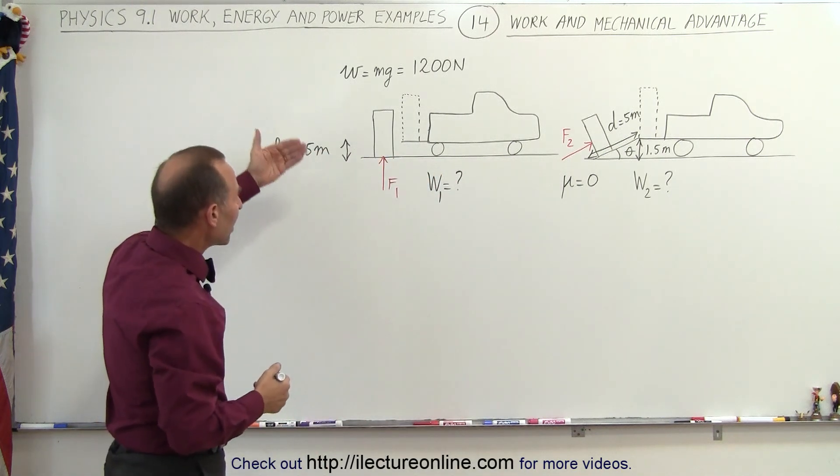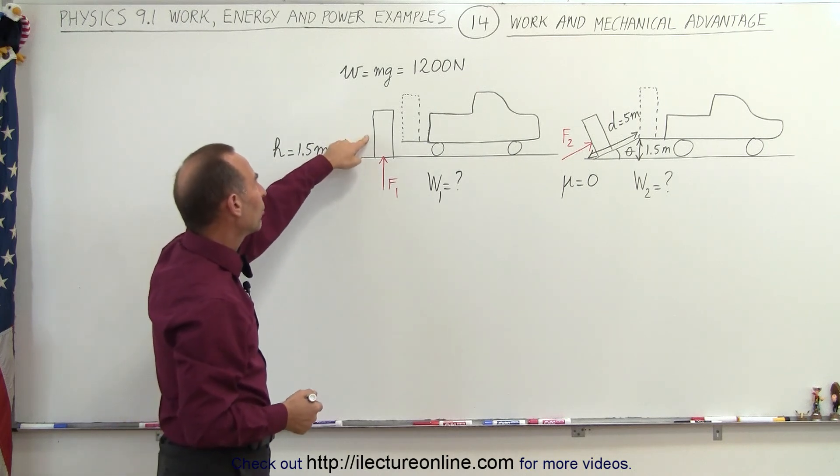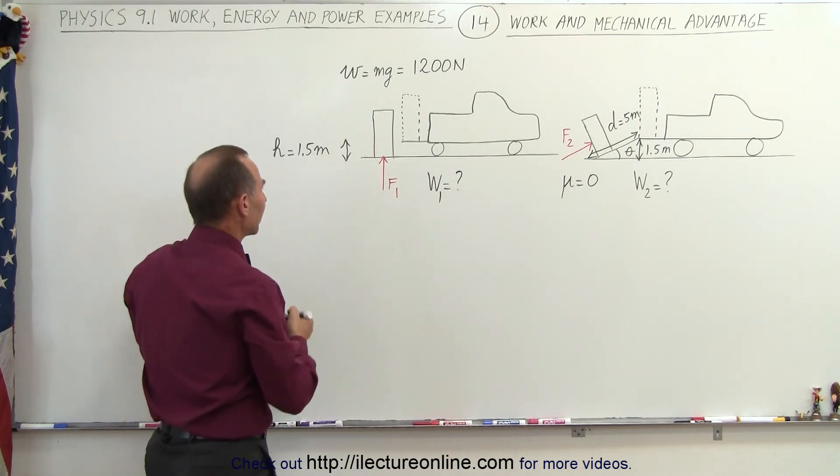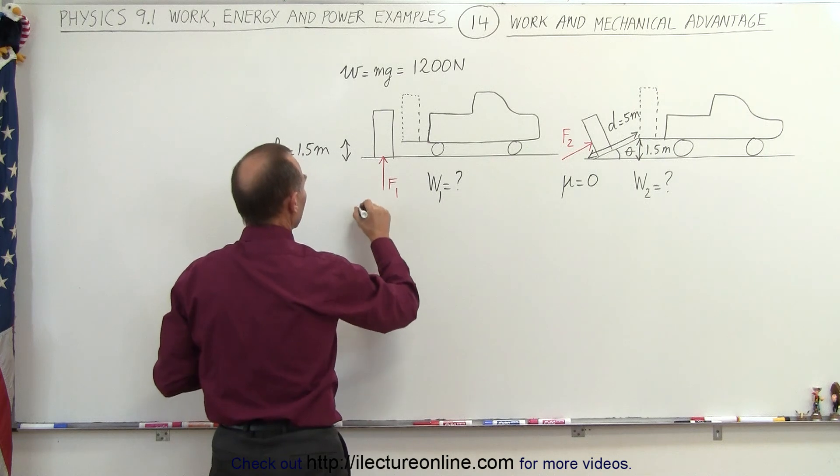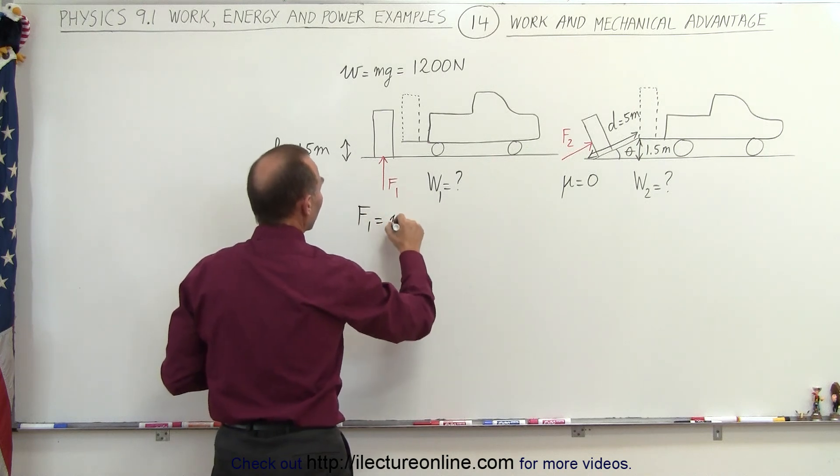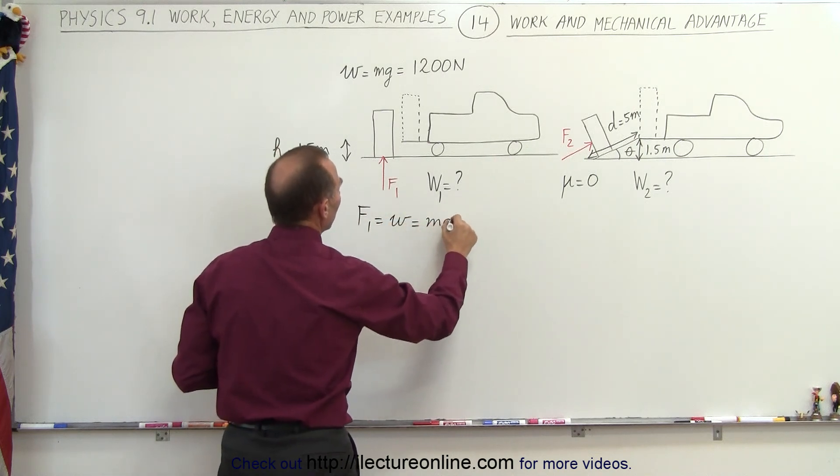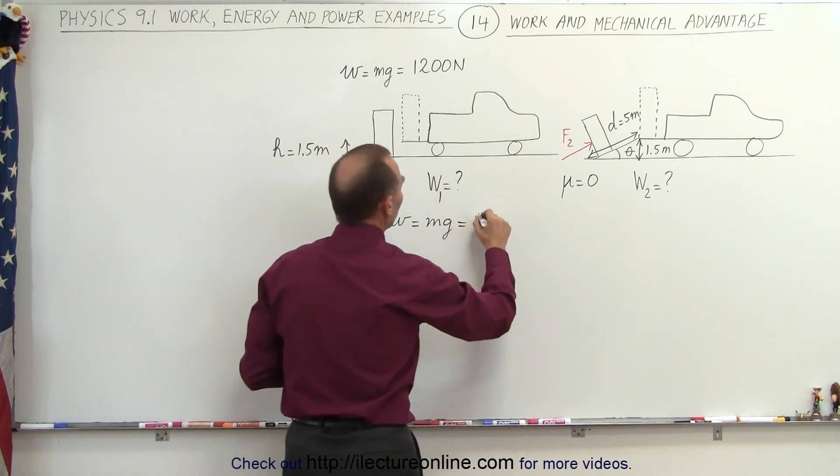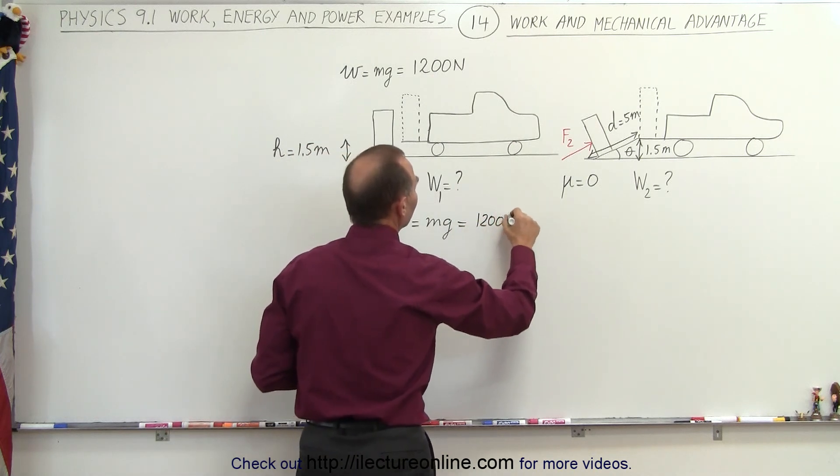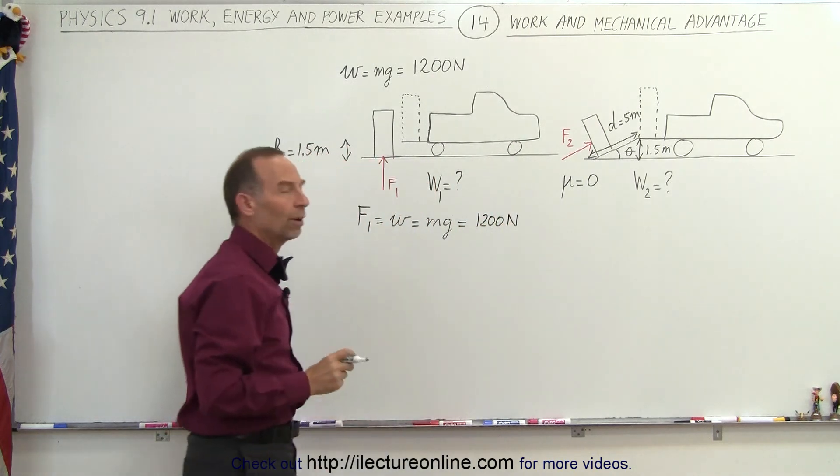But to lift it straight up, the force must be equal to the weight of the refrigerator, and so therefore we can say that F1 is equal to the weight, which is equal to mg, which is given to us as 1200 newtons. So the weight of that refrigerator is equal to 1200 newtons.